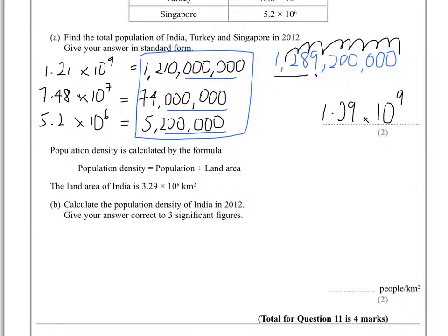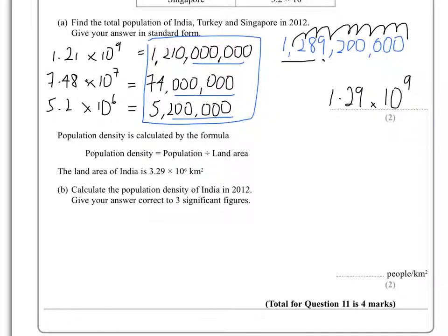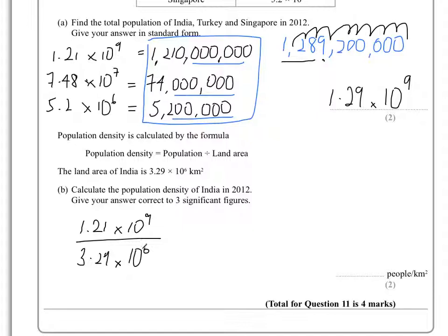In the second part, we're told that population density equals population divided by land area. We know the land area for India. The population is 1.21 times 10 to the 9, and the land area is 3.29 times 10 to the 6. The 10 to the 6 will cancel with 6 of those powers, leaving us with 10 to the 3.